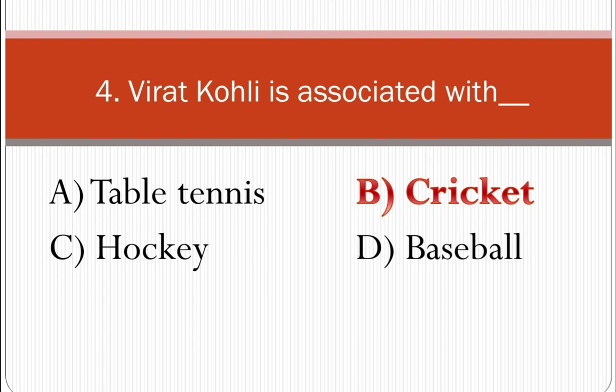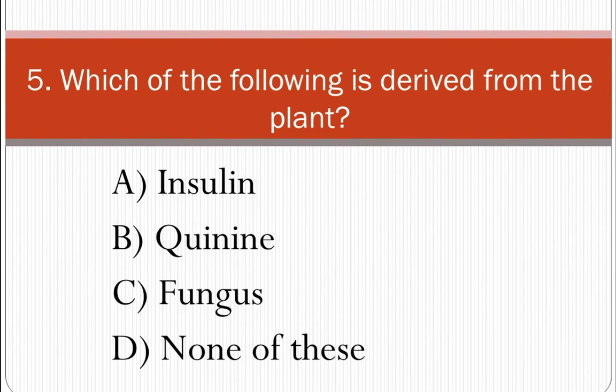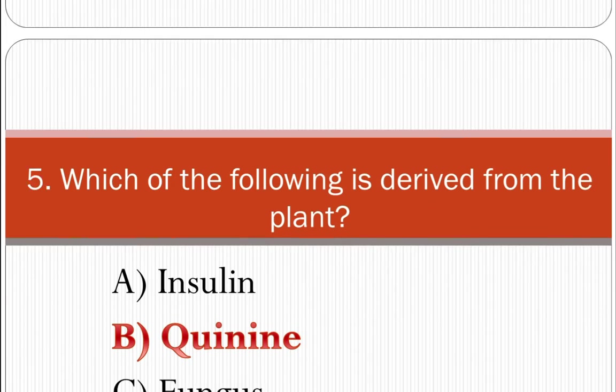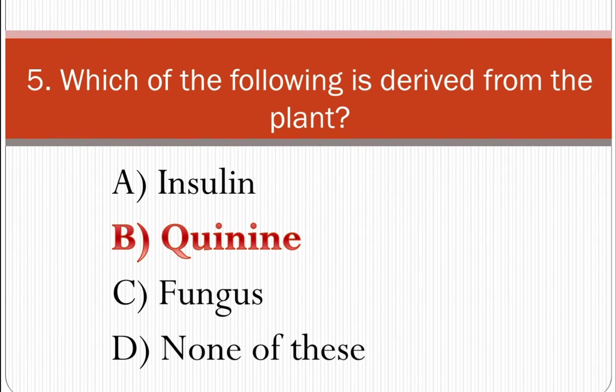Fifth question: Which of the following is derived from a plant? Options include Insulin, Quinine, Fungus, or None of the above. The answer is Quinine, which is also used as a medicine for malaria.